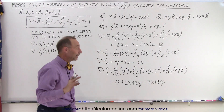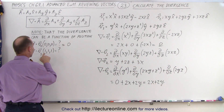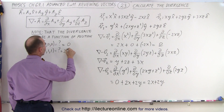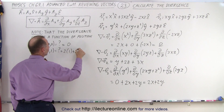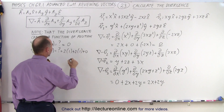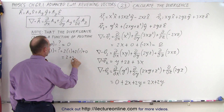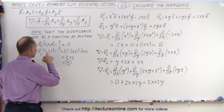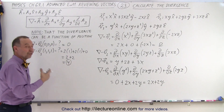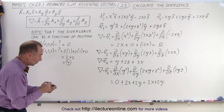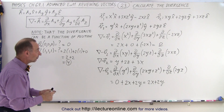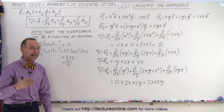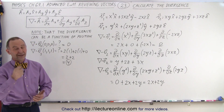Now, if I want to calculate the divergence when I'm at position (1, 1, 1), that would be equal to 2 times 1 plus 2 times 1, which is equal to 2 plus 2, which equals 4. So the divergence equals 4 at this location in space. It would be a different value for a different location in space. And that is how we find the divergence of these functions and evaluate it for any point in space.